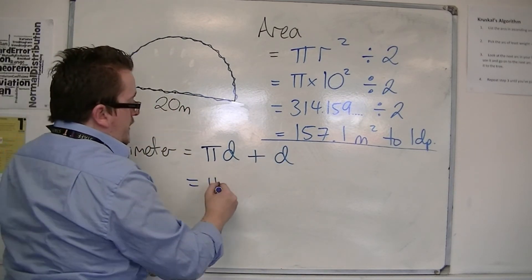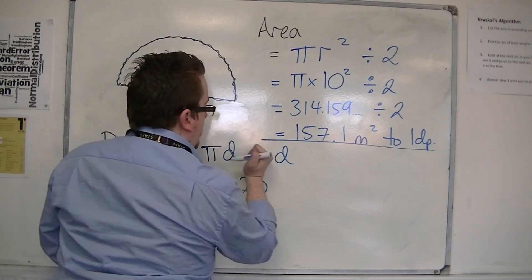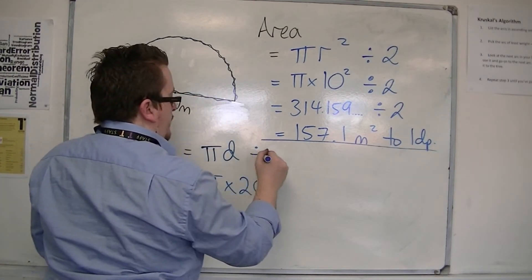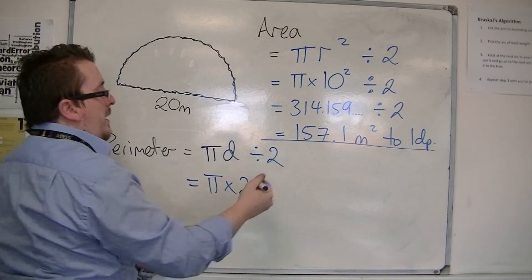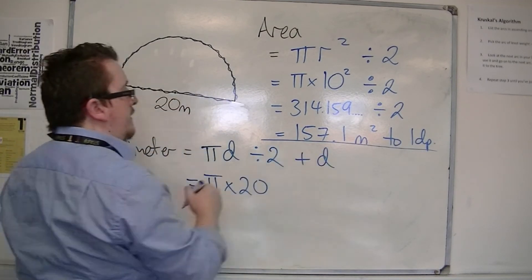So I've got pi times 20. I'm going to have to divide that by 2, because I only want half the circumference, and then I can add on the diameter.